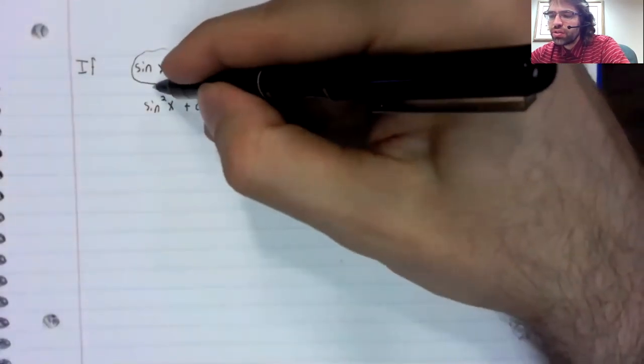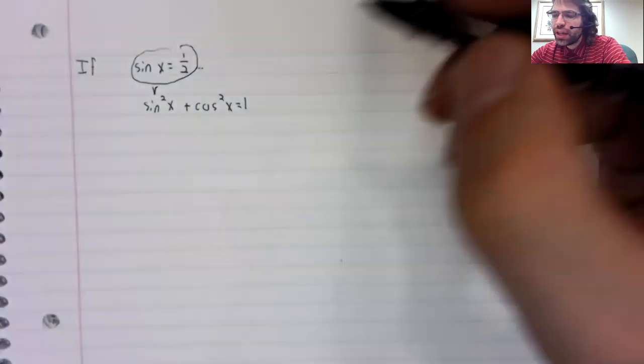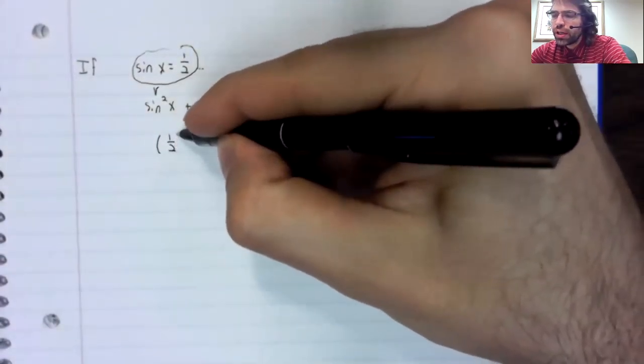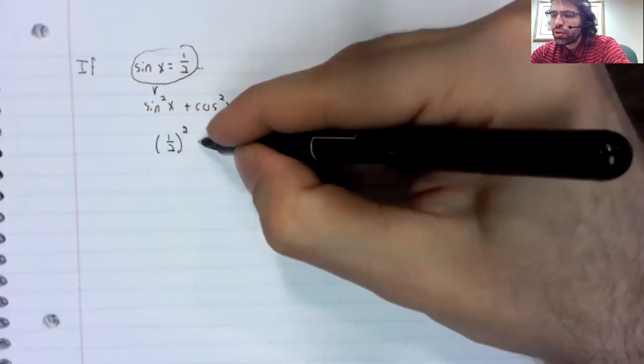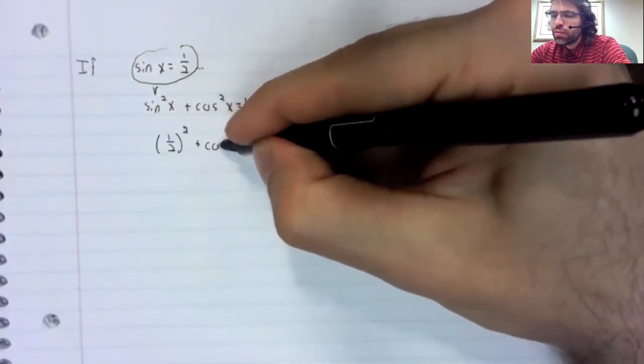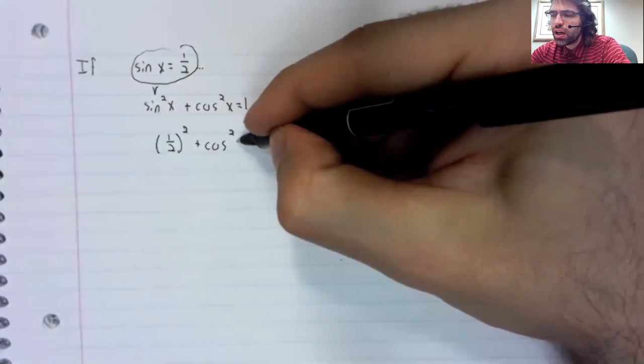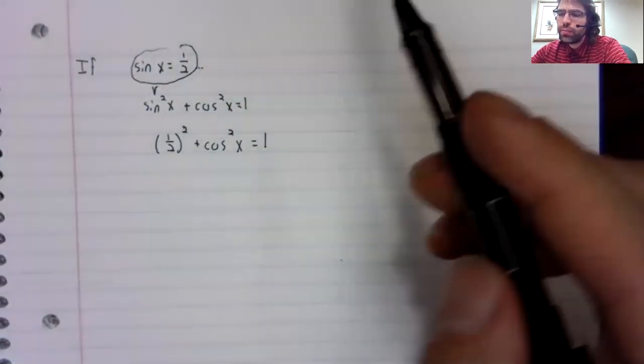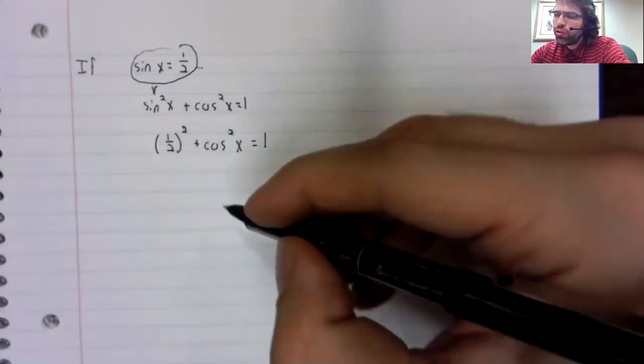So if the sine is one half, one half squared plus the cosine squared equals one. This is one fourth.